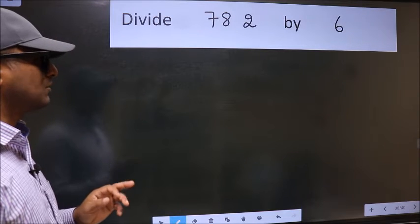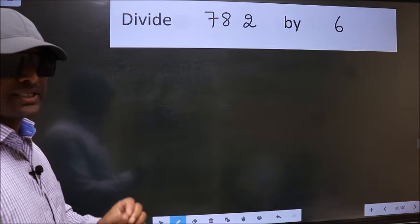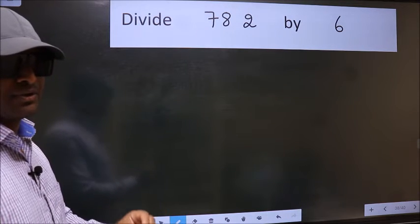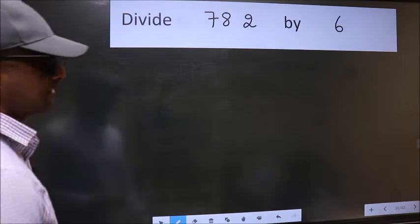Divide 782 by 6. While doing this division, many do this mistake. What is the mistake that they do? I will let you know. But before that, we should frame it in this way.